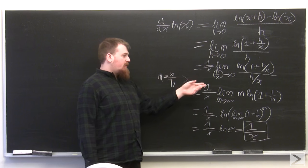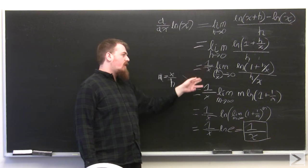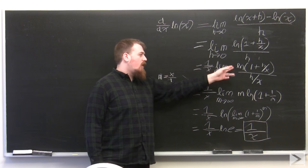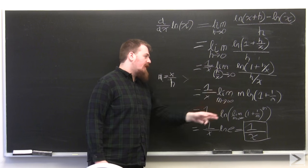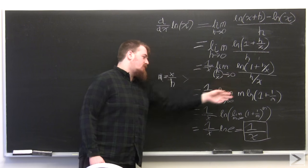We can reformulate the limit in terms of h over x going to zero. Since x is fixed, this becomes 1 over x times the limit of natural log of 1 plus h over x over h over x, getting the x from down here and dividing it out.